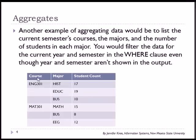So we are showing a course, English 301. We have all these students in that course. 17 of the students have declared history as their major, 19 have education and 10 have business. So this is an example of how we might want to aggregate data.